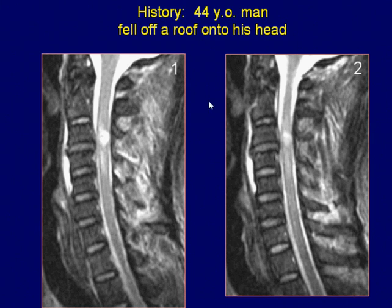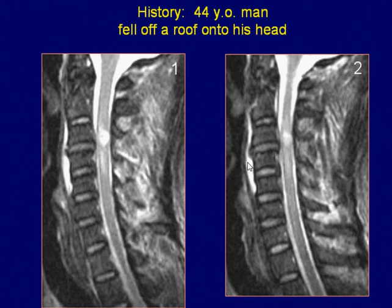A 44-year-old man with a history of trauma. Sagittal T2-weighted images of the cervical spine demonstrate a hyper-intense lesion in the spinal cord from C2 to C5 level. High signal is also seen in the region of the interspinous ligament posteriorly and the pre-vertebral region anteriorly.